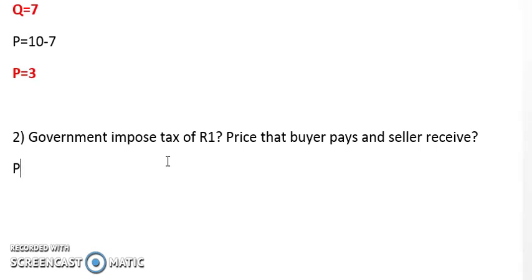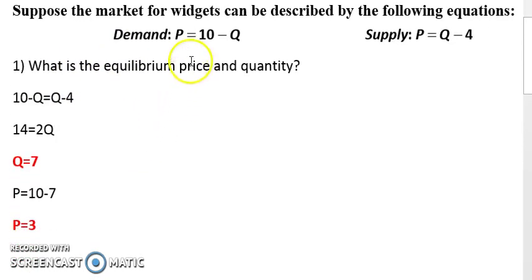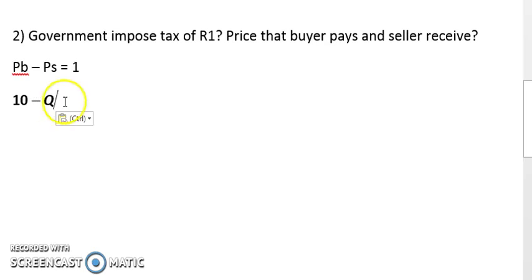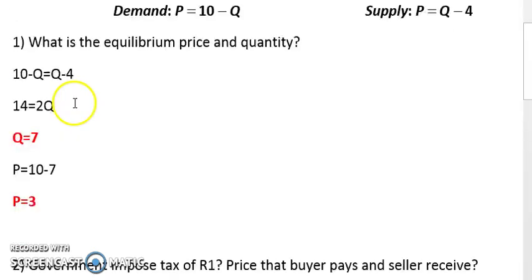Let's do this step by step. The price that the buyer pays minus the price that the seller receives must be equal to 1, so the difference between the two should equal 1. We know that we will be at equilibrium, so we substitute this concept with the equations that we have. The price that the buyer pays minus the price that the seller receives will be equal to 1.